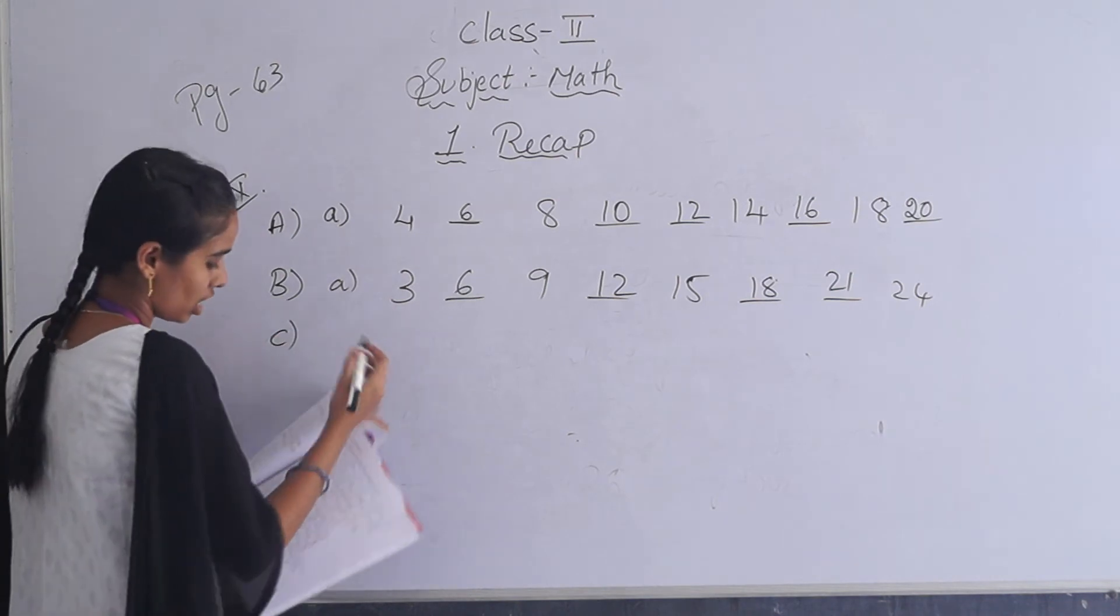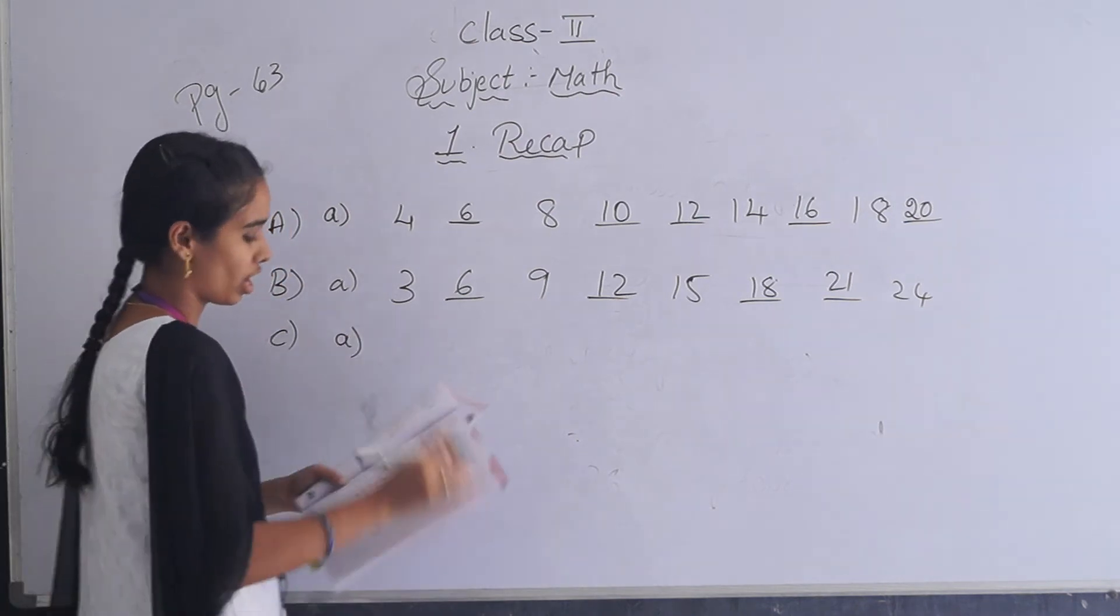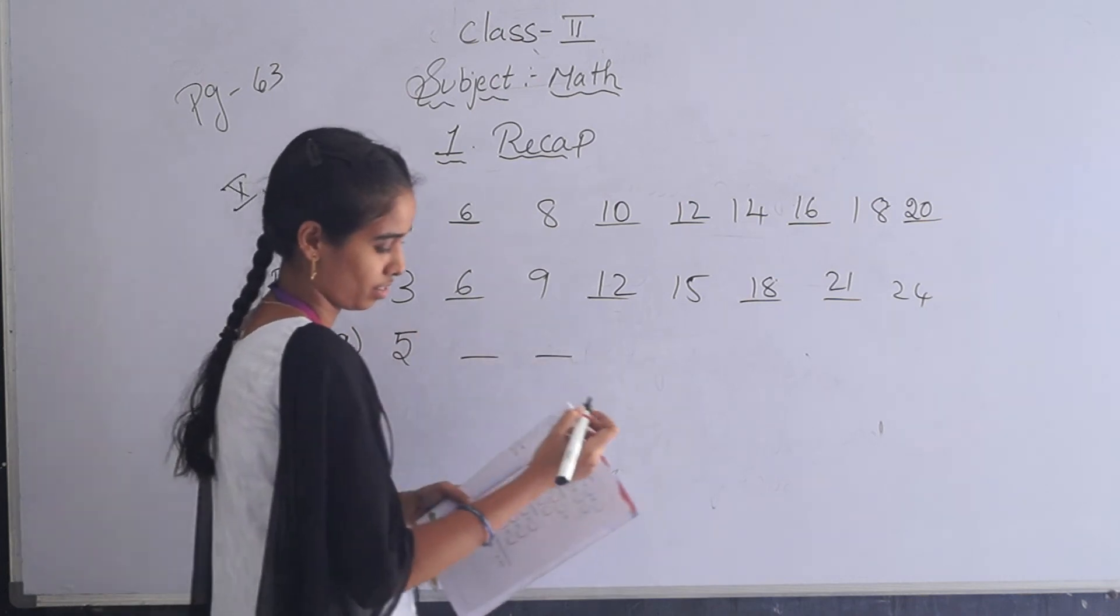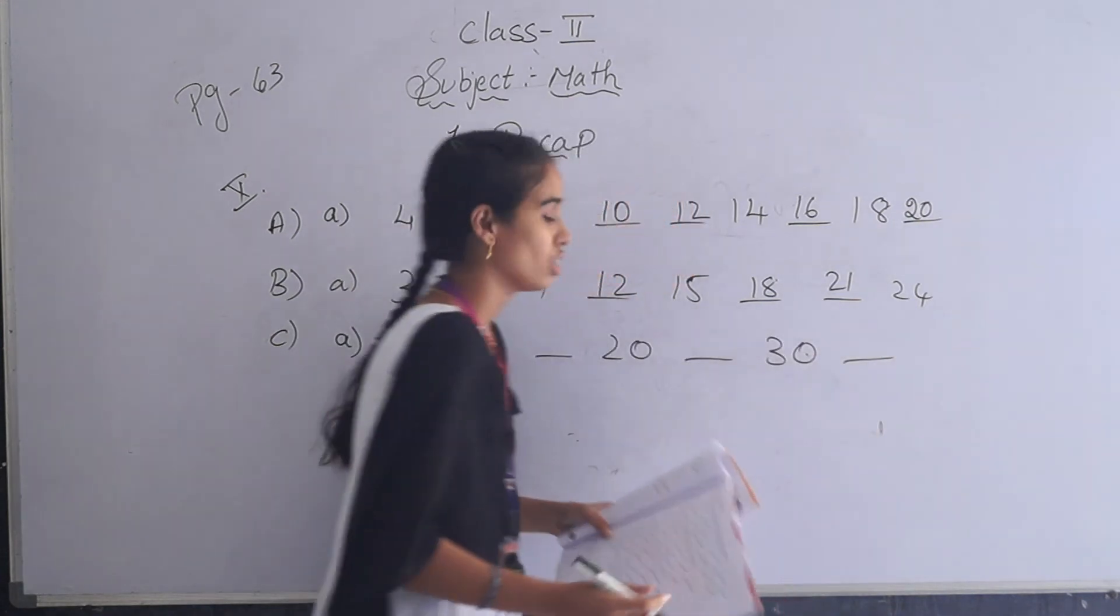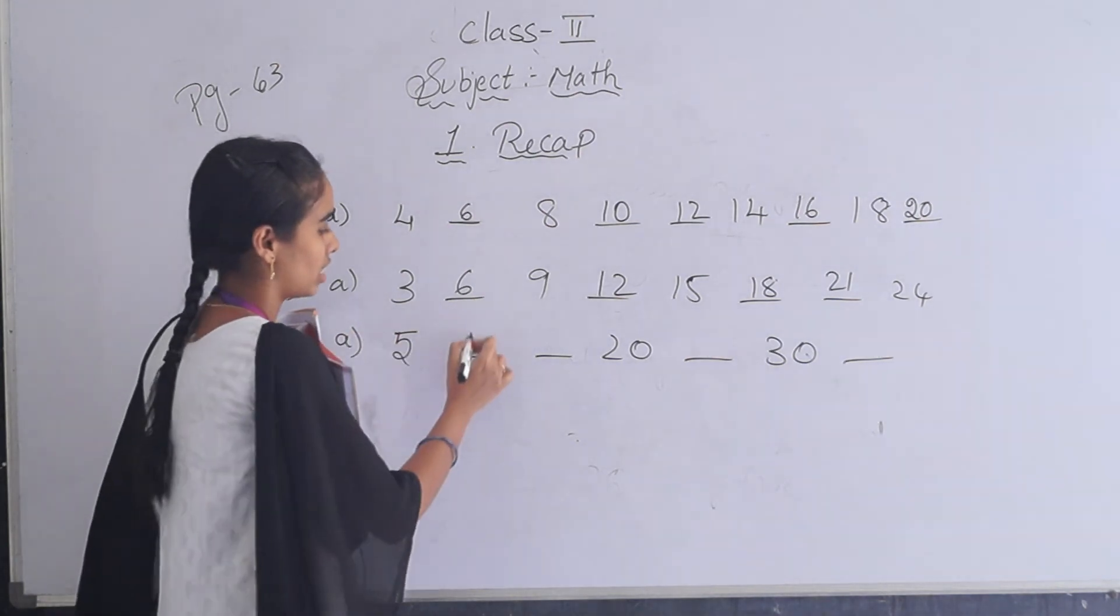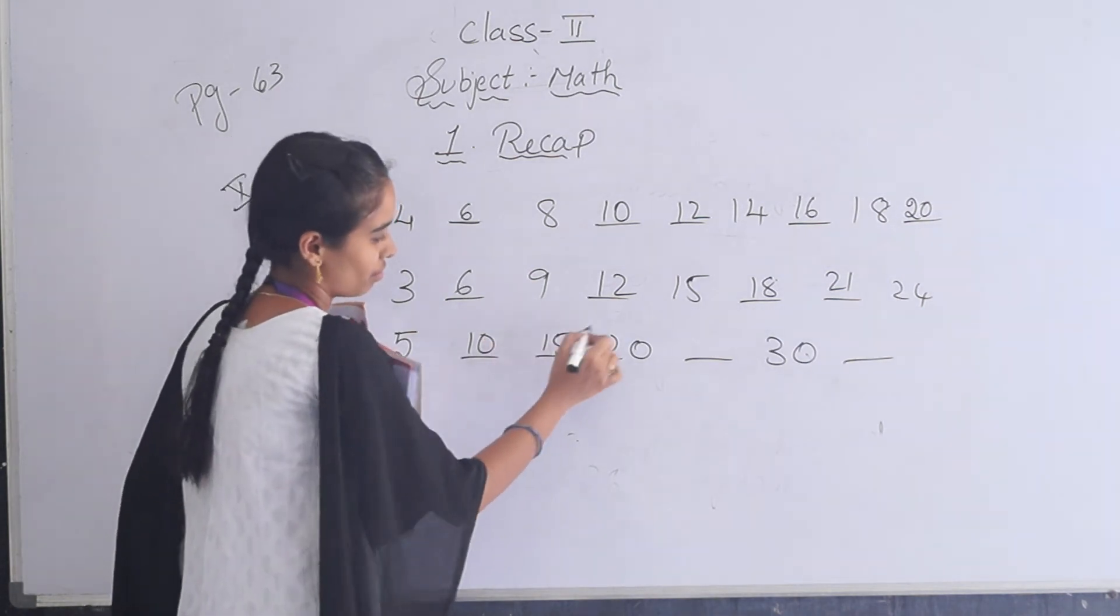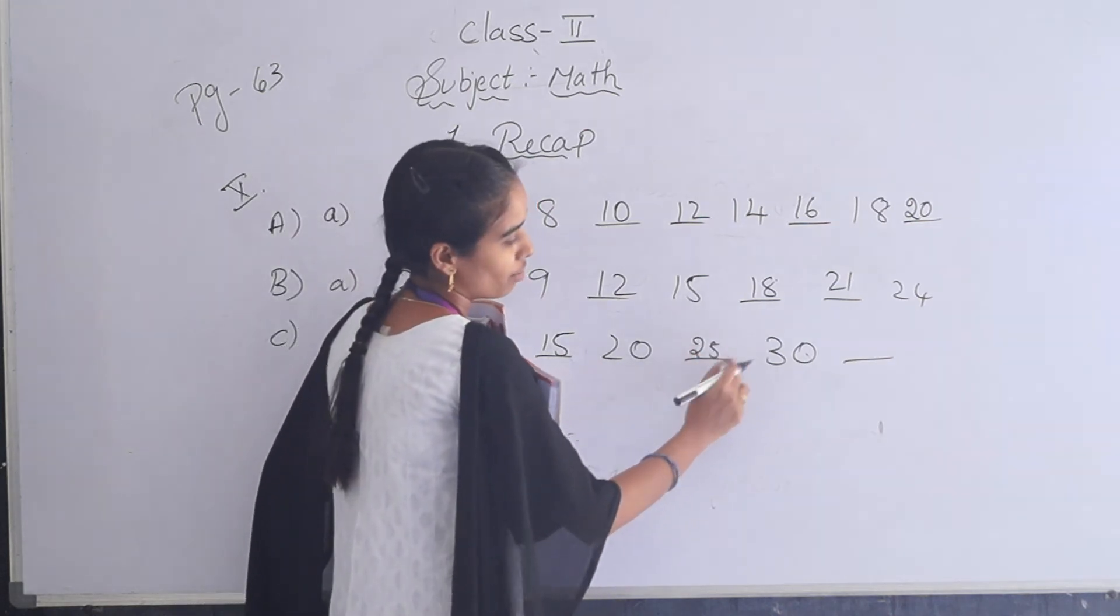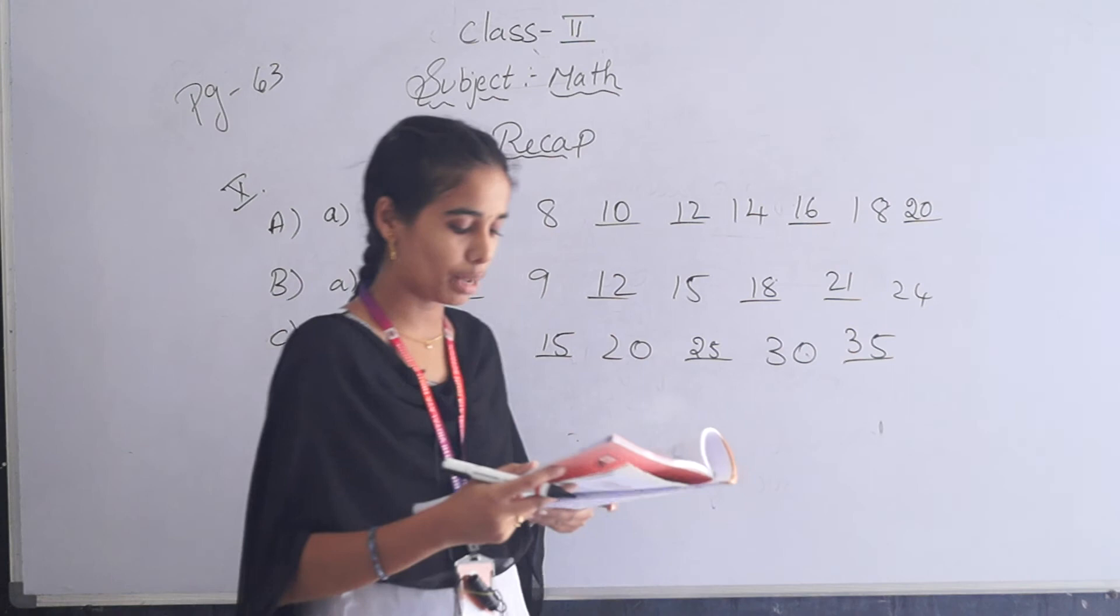Next one, C: Count in 5s and fill in the missing numbers. Here they are asking for 5s, so add 5 to each number. 5, 20, 30, and 10. So 5, you have to add 5 to this 5. 5 plus 5 is 10. Nothing but 5 table: 5 ones are 5, 5 twos are 10, 5 threes are 15, 5 fours are 20, 5 fives are 25, 5 sixes are 30, 5 sevens are 35. Like this you have to add 5. Like this you have to do the remaining ones.